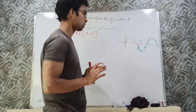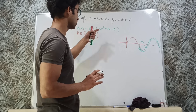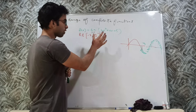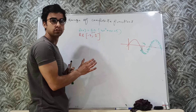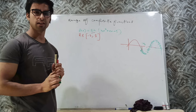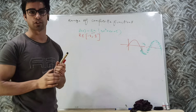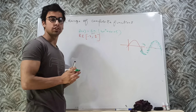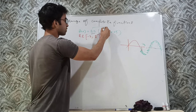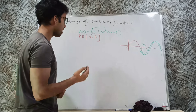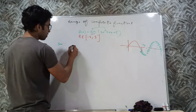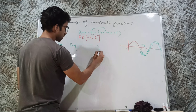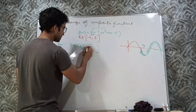You might think: why did we do all this work? We could have simply found the range of the outer function, sine of x, which is already -1 to 1. But it is not always that way — it does not mean that whatever the range of the outer function is, that will always be the range of the entire composite function. Let me illustrate with another example: sine of √(π²/16 - x²).